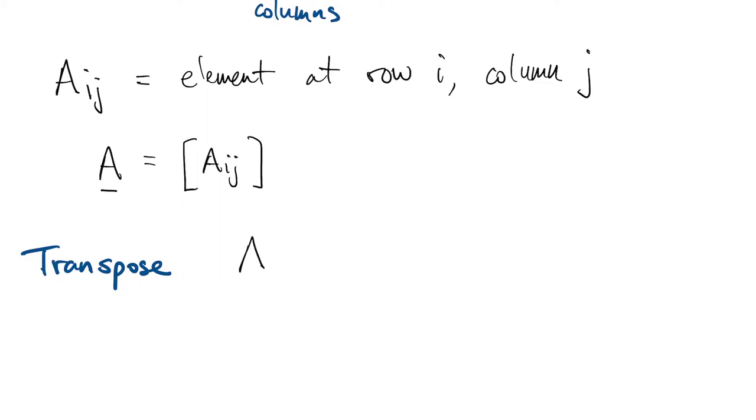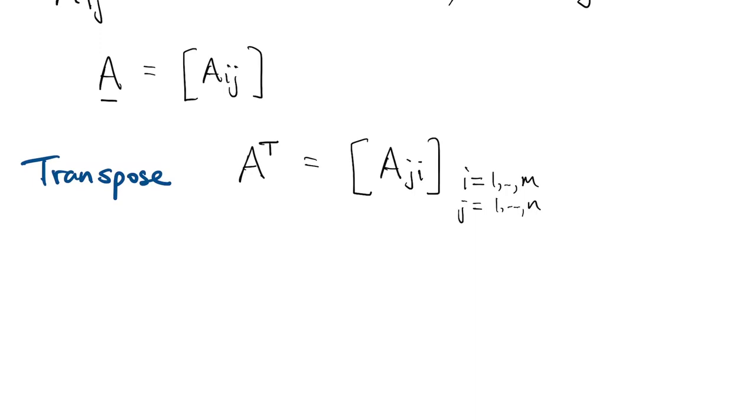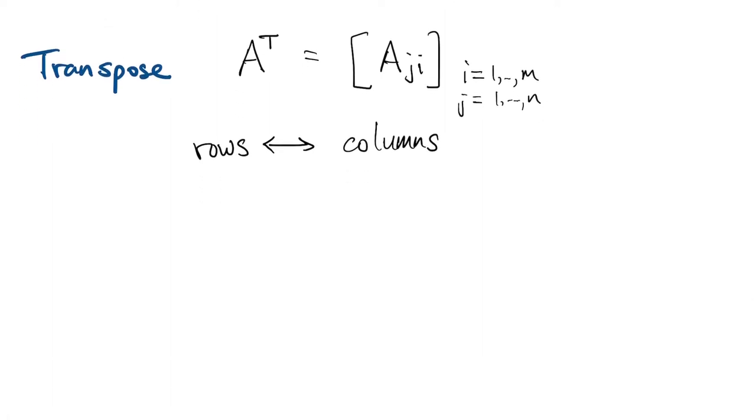One matrix operation is the transpose, so we write a superscript T. Instead of Aij, we get Aji over the same range, which means that the rows of the original matrix become the columns of the transpose and vice versa. So if the matrix started out as m by n, its transpose is n by m.